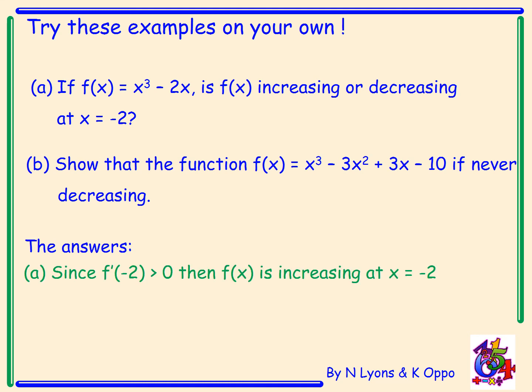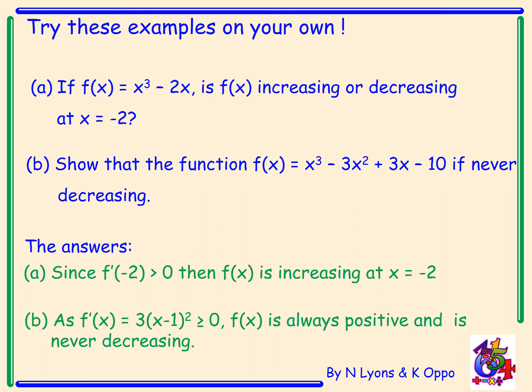The answers. A. Since f dash of minus 2 is greater than 0, f(x) is increasing at x equals minus 2. And b. As f dash of x equals 3, x minus 1 all squared, that will always be greater than or equal to 0. f(x) is always positive and therefore is never decreasing.